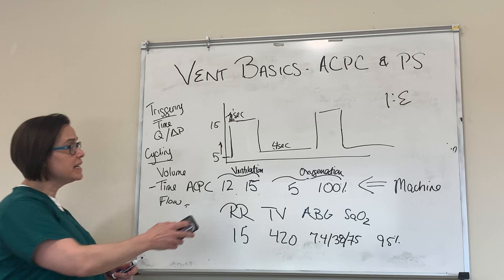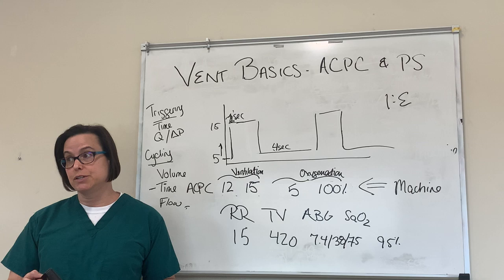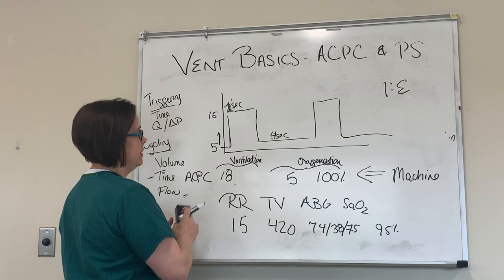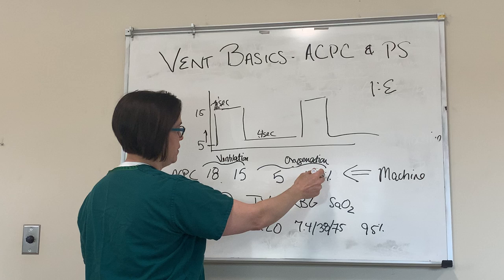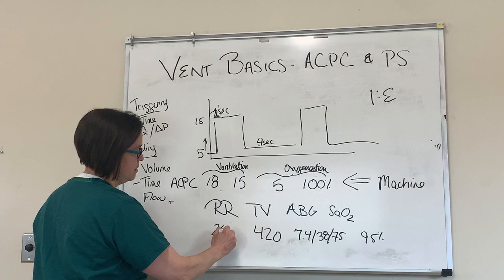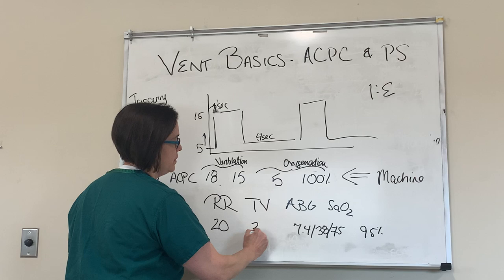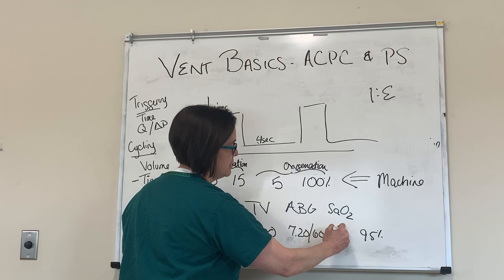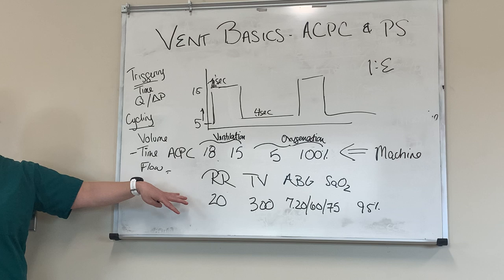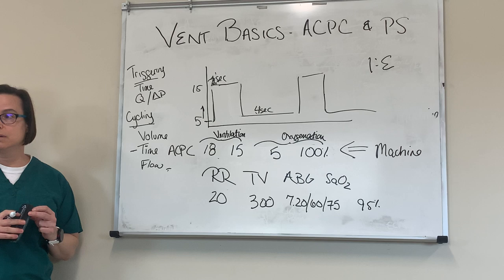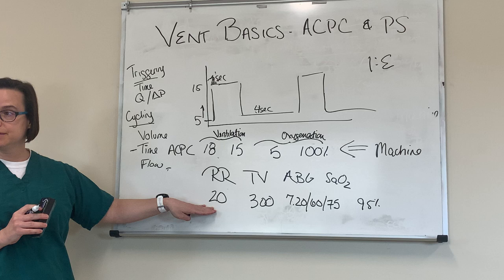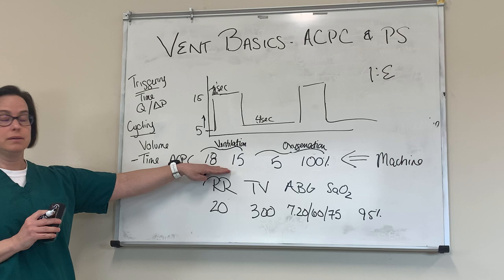So I'm going to give you some settings and I want you to tell me, based on what the patient is doing with them, how you want to change the ventilator. Patient is on a rate of 18, an inspiratory pressure of 15, a PEEP of 5, and FiO2 of 100%. On that, they're breathing 20, have a tidal volume of 300, and a gas of 7.20/60/75 with an SAO2 of 95%. The patient is breathing over the vent — brainstem intact. You could change the rate, but you'd have to go higher than 20.